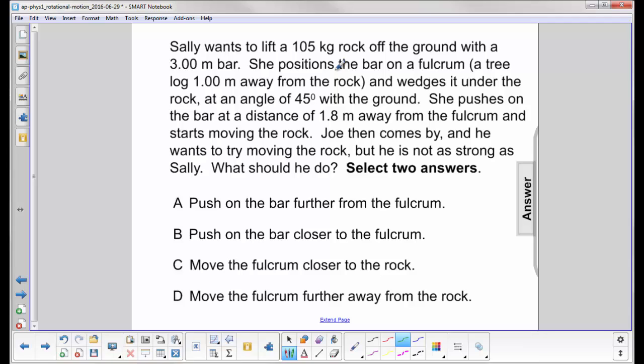Joe wants to maximize the torque he delivers because he can only exert a certain amount of force. How do you maximize torque? Well, you would increase your distance away from the fulcrum. So what Joe should start doing is push on the bar further away from the fulcrum.